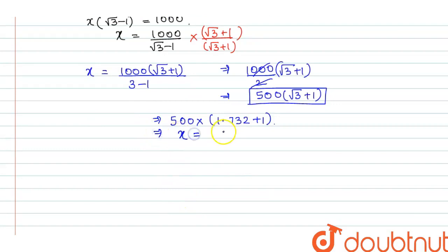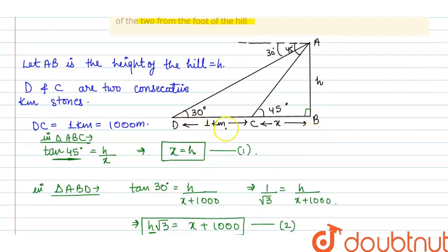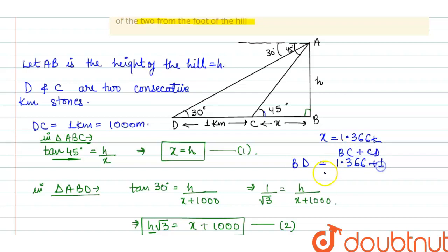So the value of x is 500 times 2.732 = 1366 meters. Converting to kilometers, 1366 divided by 1000 gives 1.366 kilometers. This is the distance BC (from foot of hill to the first stone C). The first stone is at 1.366 kilometers. For the second stone, the distance BD equals BC plus CD = 1.366 plus 1 = 2.366 kilometers.